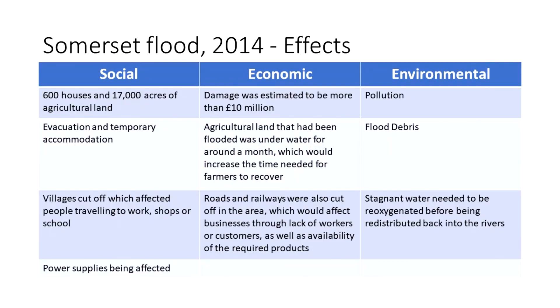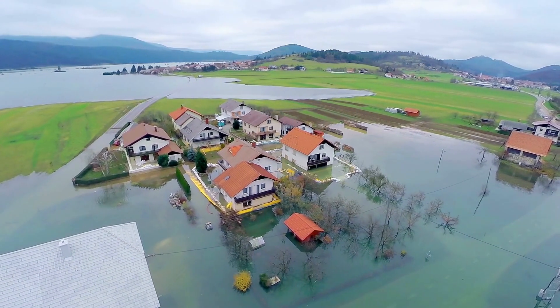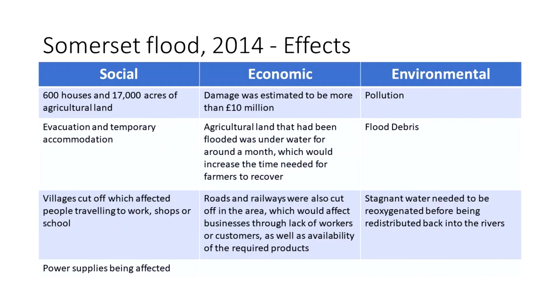When looking at the impacts of flooding, we break them down into social, economic, and environmental effects. The social effects include houses and agricultural land being damaged and power supplies being cut off. For the local economy, the cost of damage was estimated at more than £10 million. Environmental effects included pollution to the area, flood debris, and stagnant water.